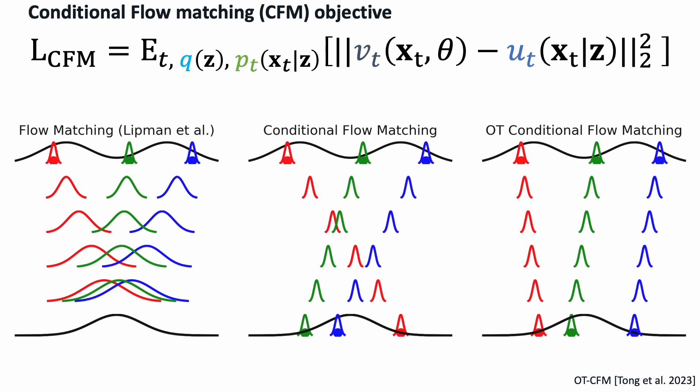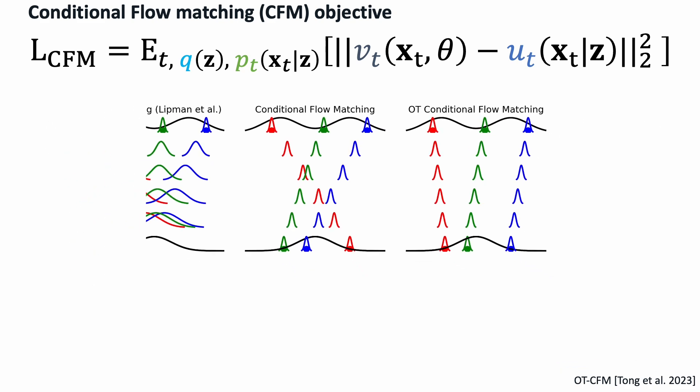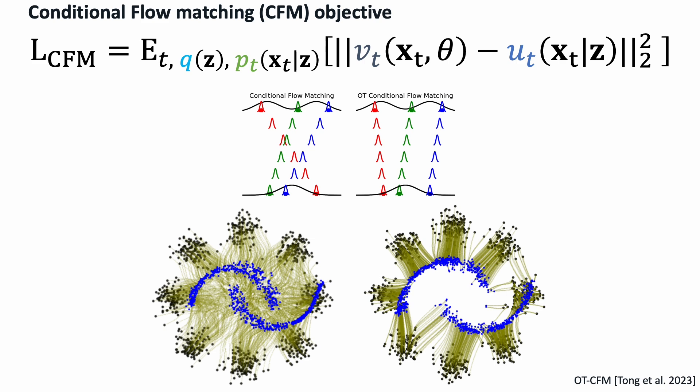Here is a summary of three examples of conditional flow matching designs. Compared with independent coupling, having some coupling within each mini-batch leads to clearer probability paths.